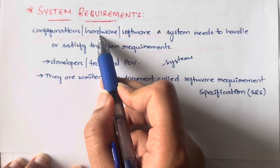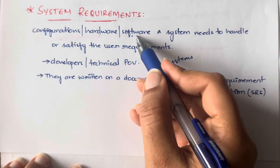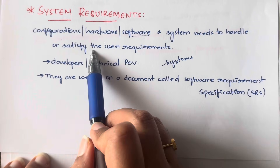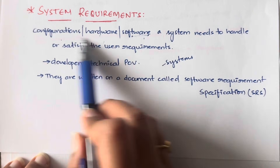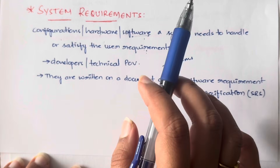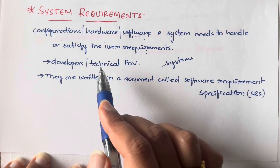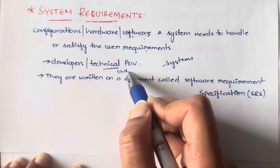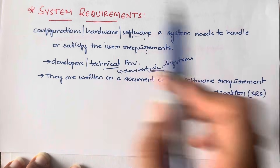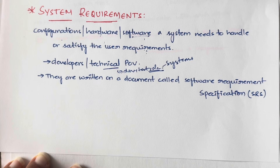These include configurations, hardware, or software — like whether you want to do the development in Python or Java, what kind of computers you want, what kind of servers you want. All these things that you need in order to handle the requirements of the users are called system requirements. Usually these are from the developers or technical people's point of view — developers, testers, DevOps, cloud engineers, whoever is involved in the organization — what they need to handle the user or client requirements.